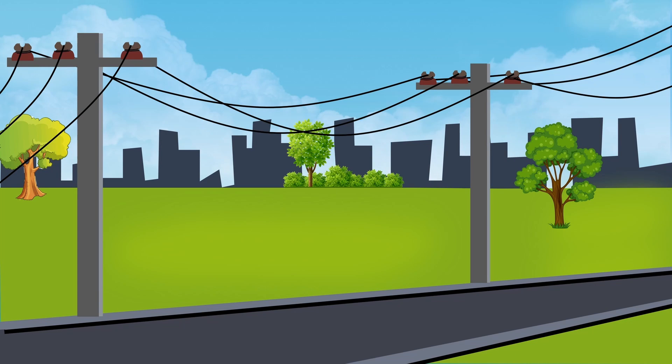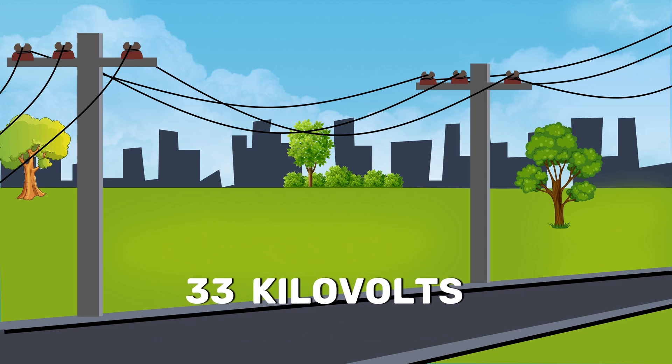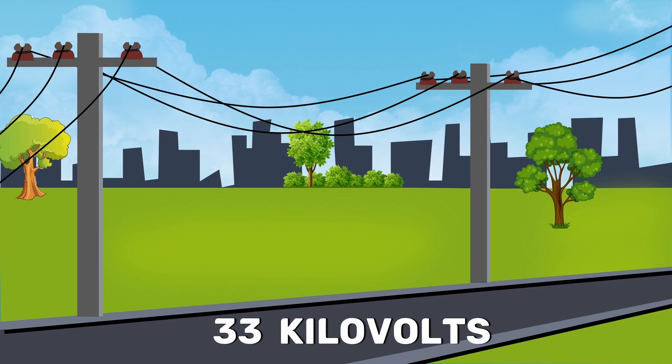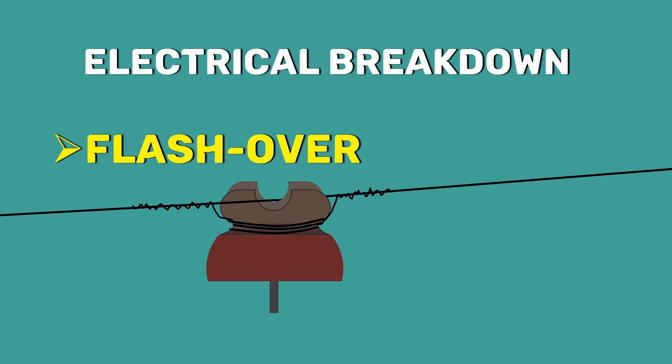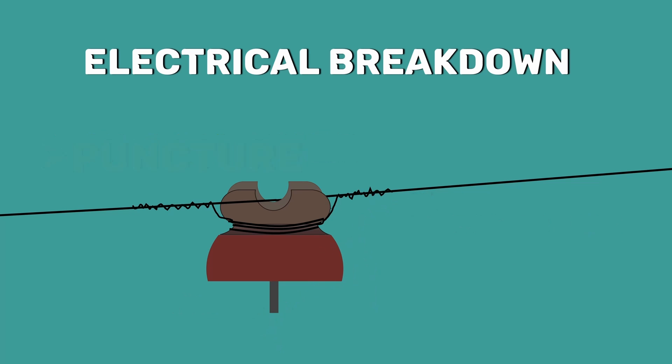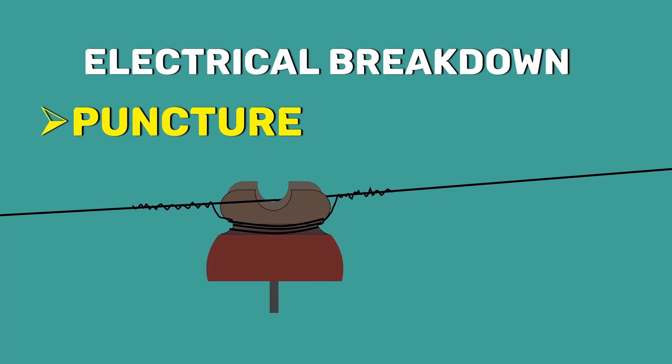So, the pin type insulators are used at voltages up to 33 kV. Even after designing an insulator considering all these factors, there are times where we cannot avoid the electrical breakdown. The electrical breakdown occurs as either a flashover or a puncture. In a flashover, an arc occurs between the power line and the insulator pin through the air, while during puncture, the arc travels through the insulator body.